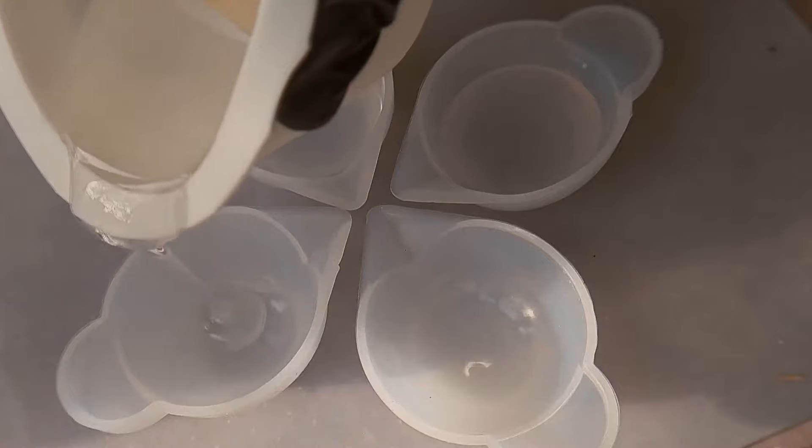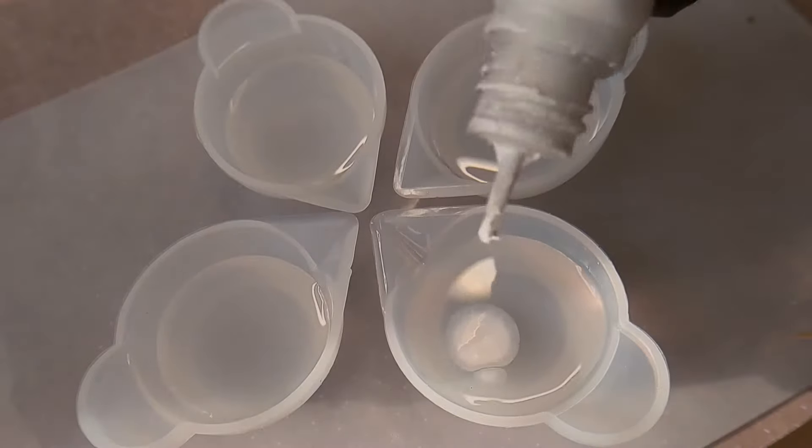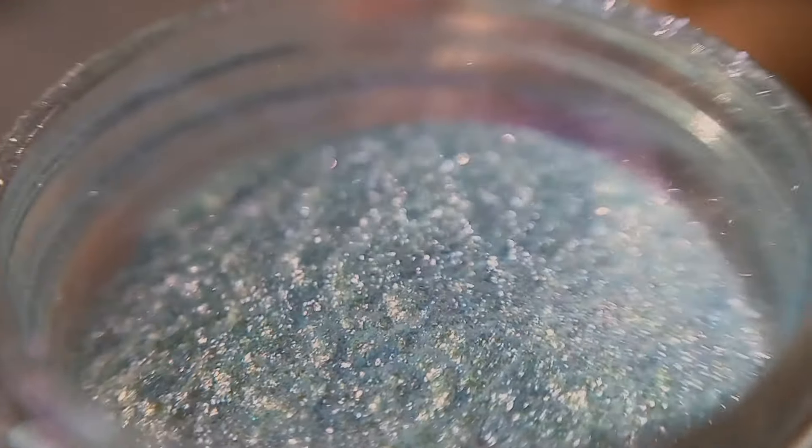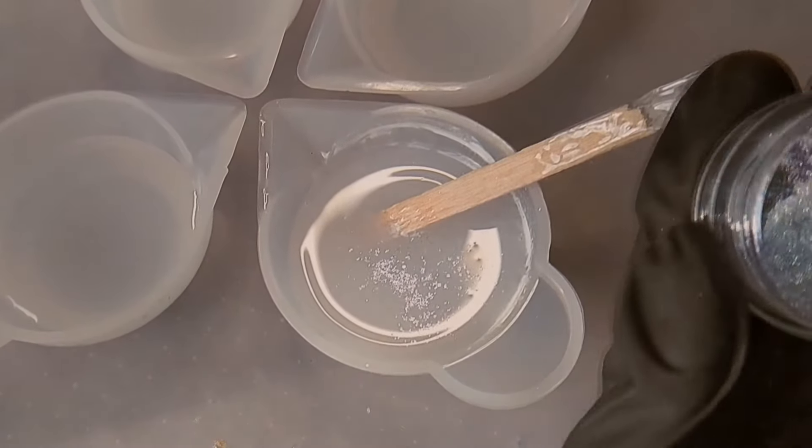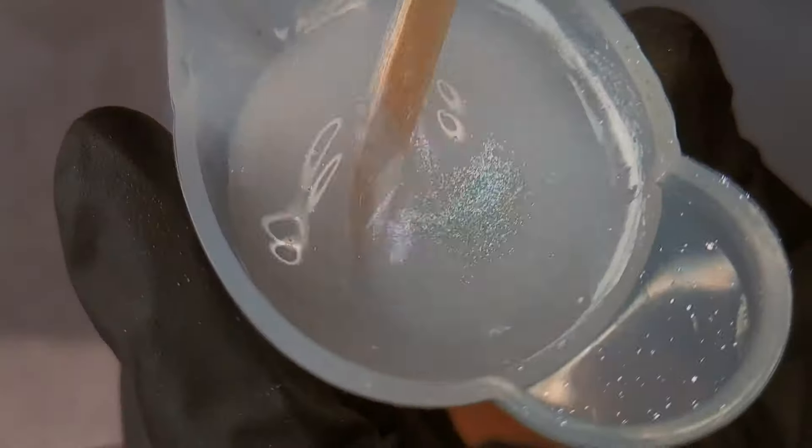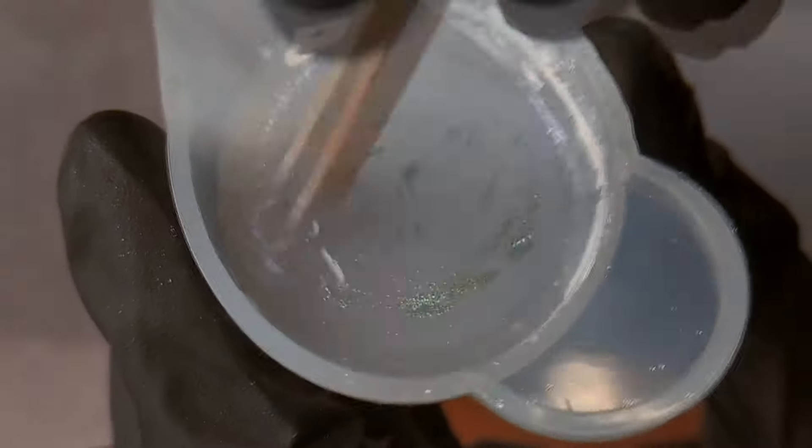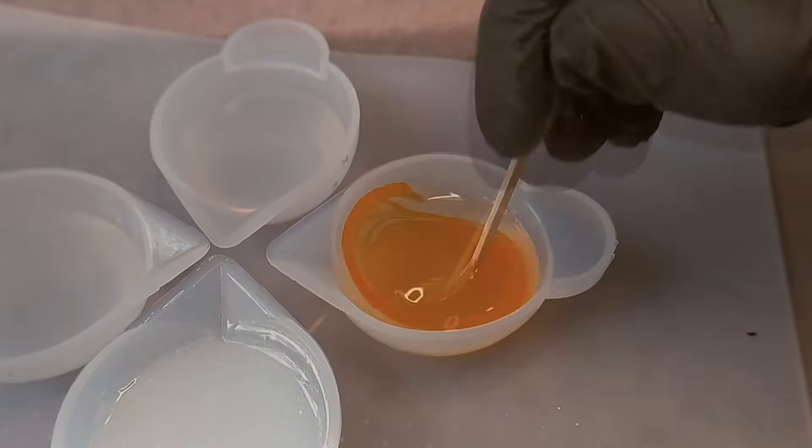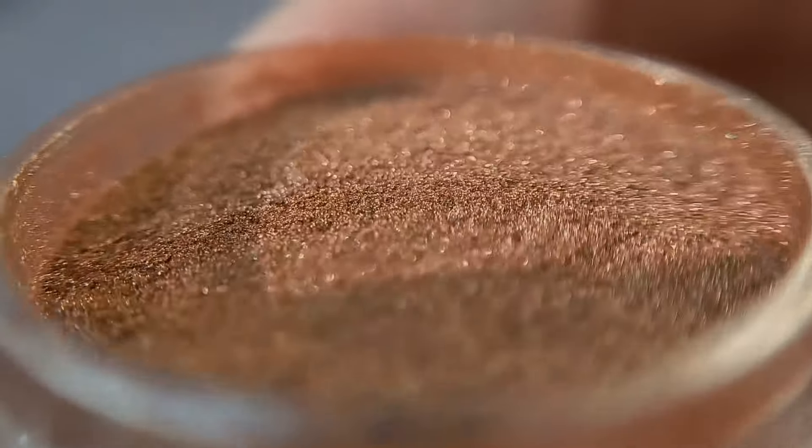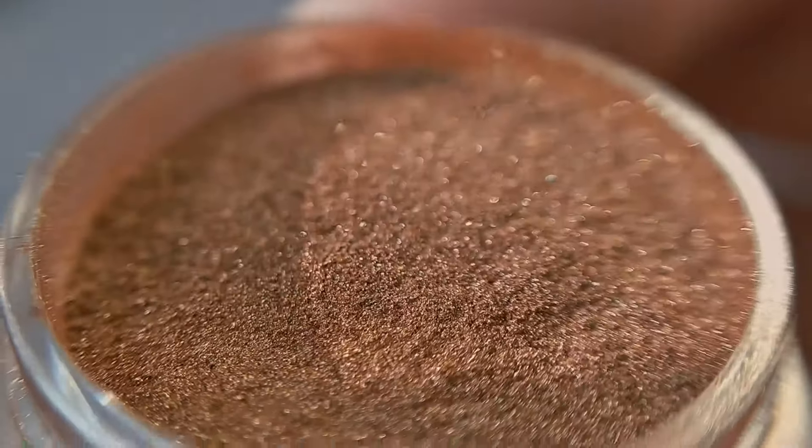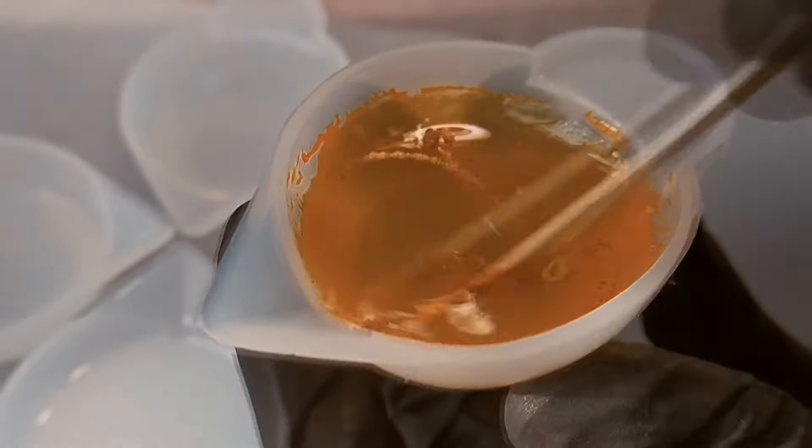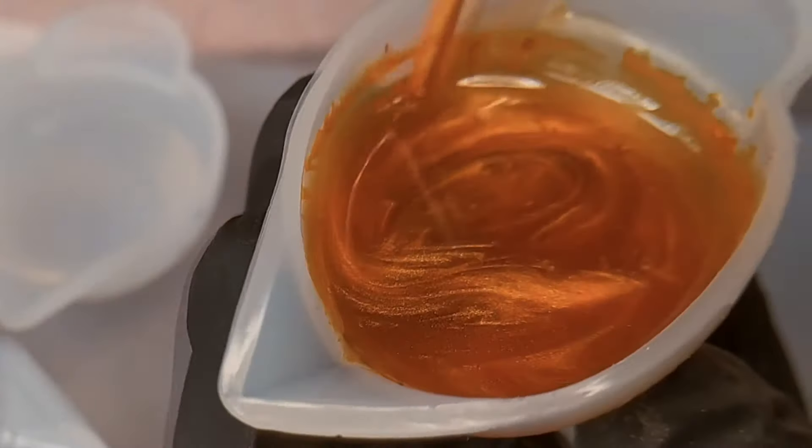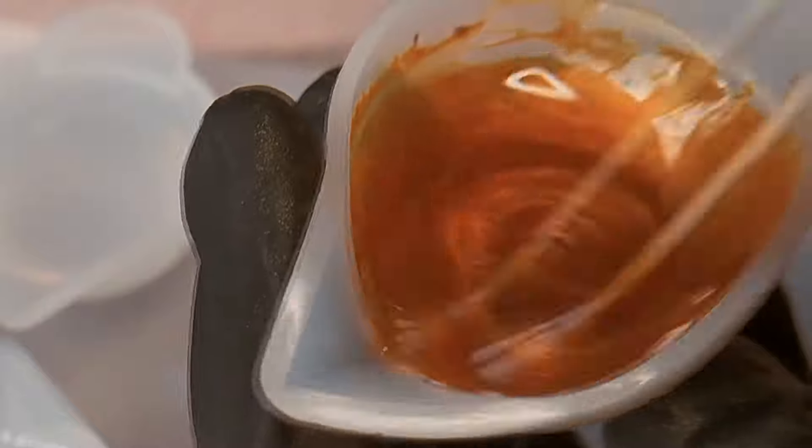While air bubbles come out, let's make some more colors. Just some drops of white to make resin translucent. And of course sparkles. It is nail powder, but you can use eyeshadows or glitter.